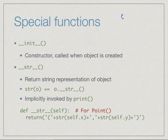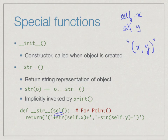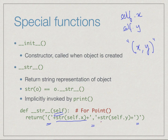For our Point class, if we want to print the point, we define underscore underscore str. Internally we have self dot x and self dot y and we want to display them as (x, y). The function creates a string with an open bracket, the string representation of self dot x, a comma, the string representation of self dot y, and a close bracket — constructing the output as we would expect a point to look.